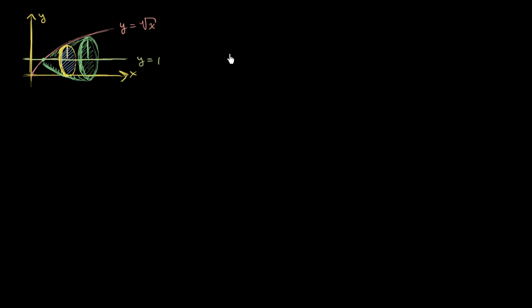So what's the area of this face? Well, it's going to be pi times the radius of the face squared. Now, what's the radius of the face here? Well, it's not just square root of x. Square root of x would tell us the distance between the x-axis and our function. It's now square root of x minus 1. This length right over here is square root of x minus 1 for any given x in our interval. So it's going to be equal to square root of x minus 1. It's essentially our function minus what we are rotating around — that gives us the radius. And so this gives us the area of each of our faces, and then we just multiply that times the depth, which of course is dx.